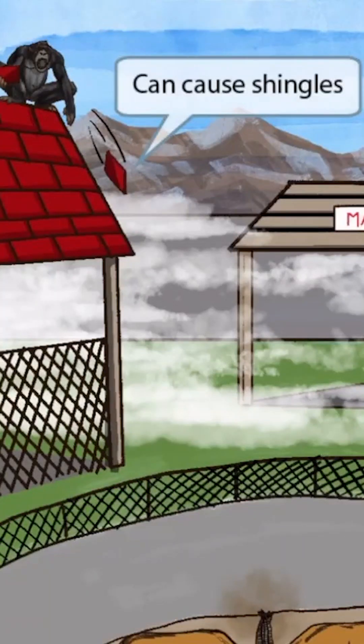Now let's turn our attention to the left side of the image, where we can see a clever monkey that has escaped. He's taunting the visitors and throwing shingles at everyone. Maybe this is why the zoo closed early, and now the line of people are leaving the zoo. The monkey throwing shingles should help you remember that VZV can cause shingles.